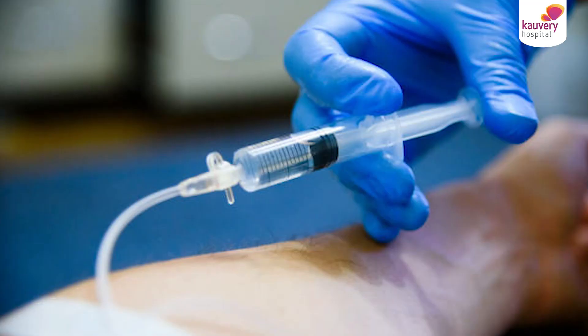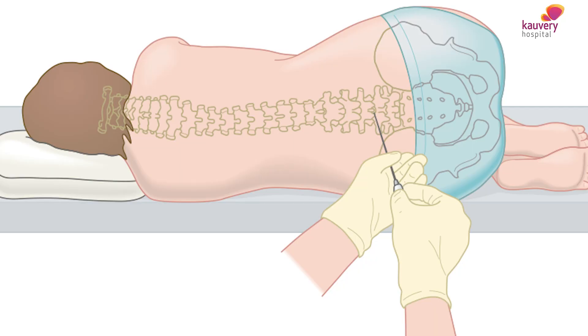Drugs can be given orally as tablets, intravenously (IV), or intrathecally — that is, into the CSF fluid. When drugs are given orally or via the blood stream, they may not reach the brain properly due to the blood-brain barrier. When given intrathecally, the drug reaches the brain and spinal cord better. This route is used in cases where lymphoma is present in the brain and spinal cord, or in cases of high-grade lymphomas.